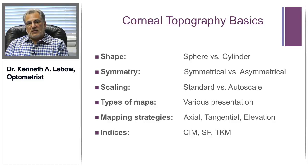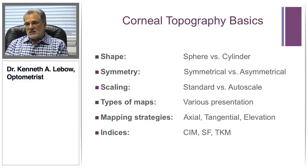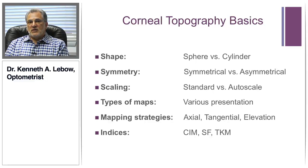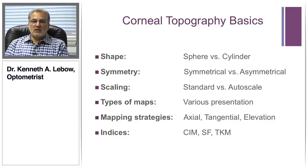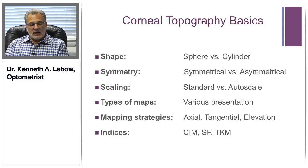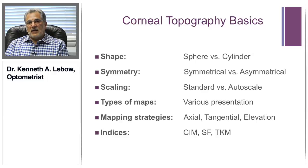The rest of the presentation is going to be a little technically advanced. You have to appreciate certain basics of corneal topography — you should know the difference between sphere and cylinder as it relates to form recognition, the difference between symmetric and asymmetric topographies, and appreciate the different scaling issues. If you have one image on a different scale, such as auto scale versus custom scale, the two images may look totally different. There are different maps — axial, tangential, elevation — and some very key indices to pay attention to.